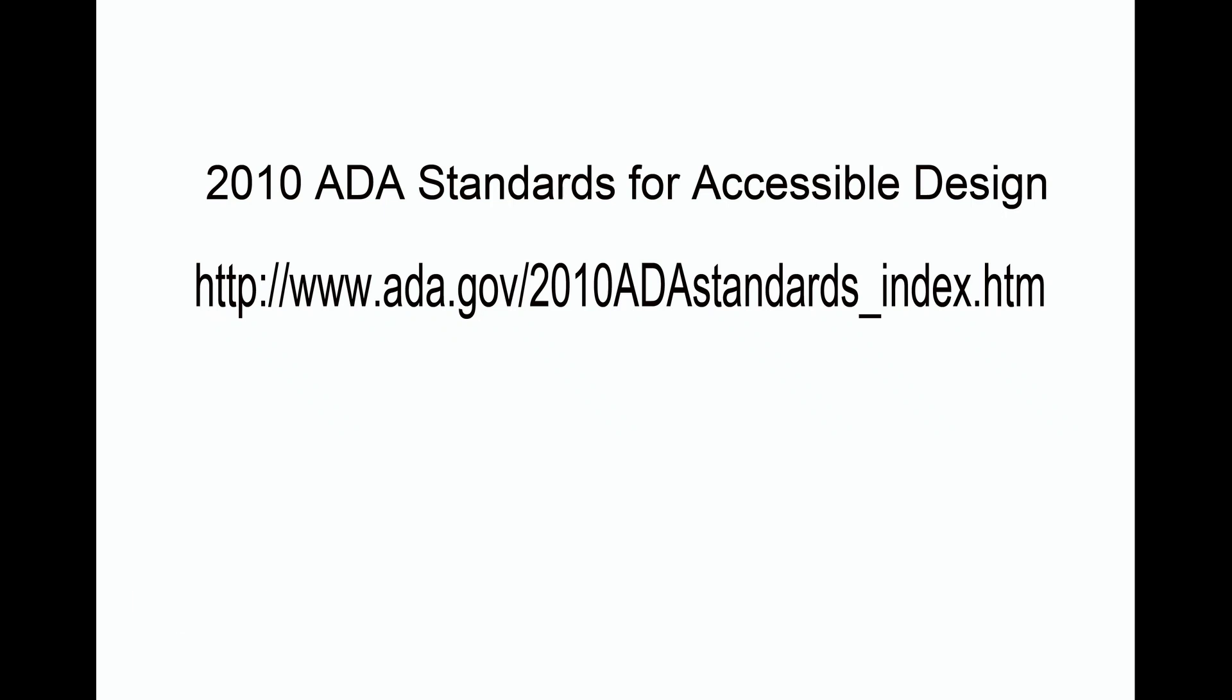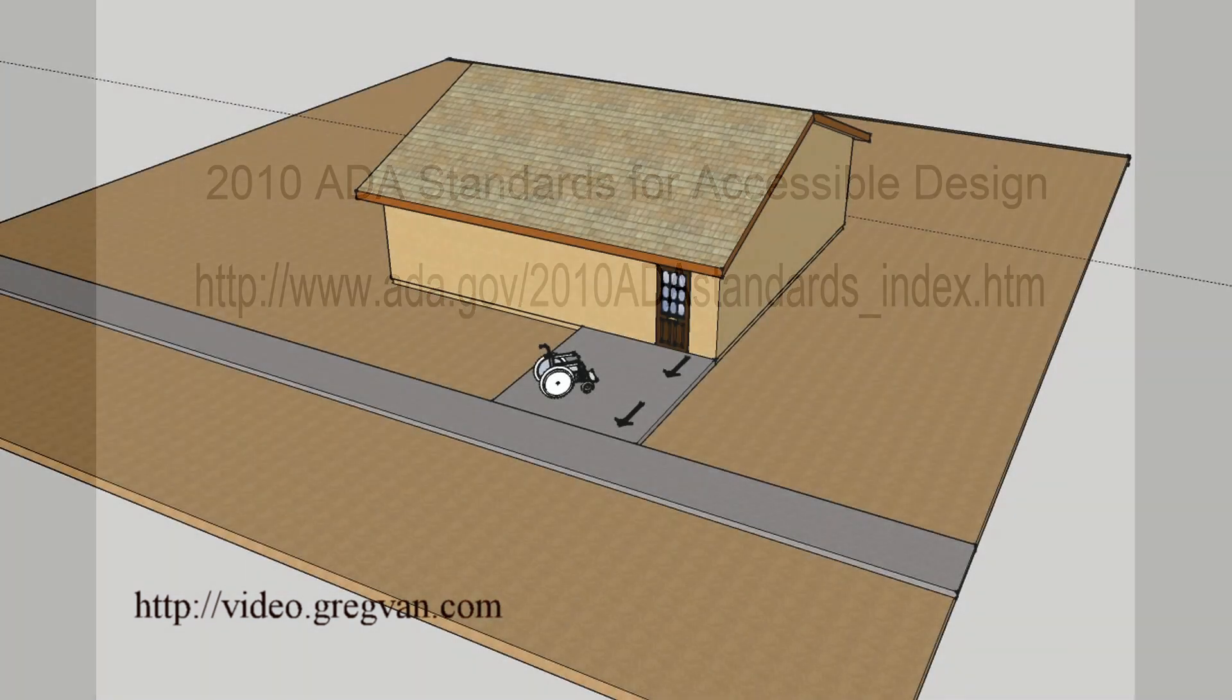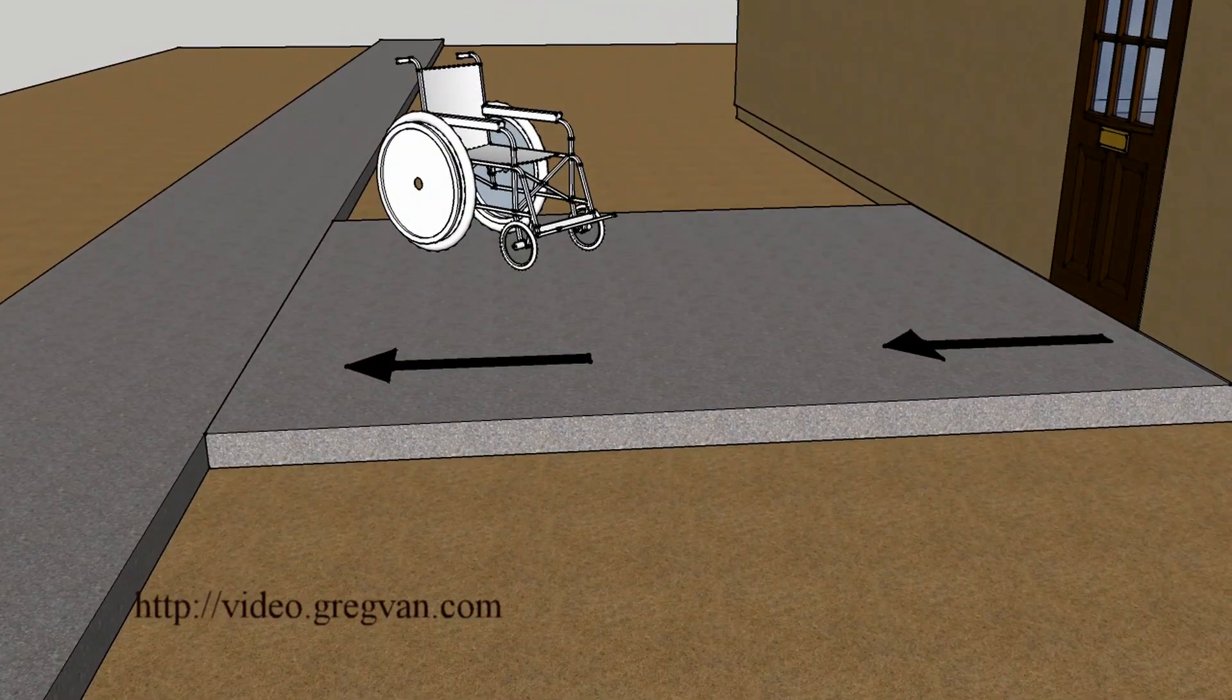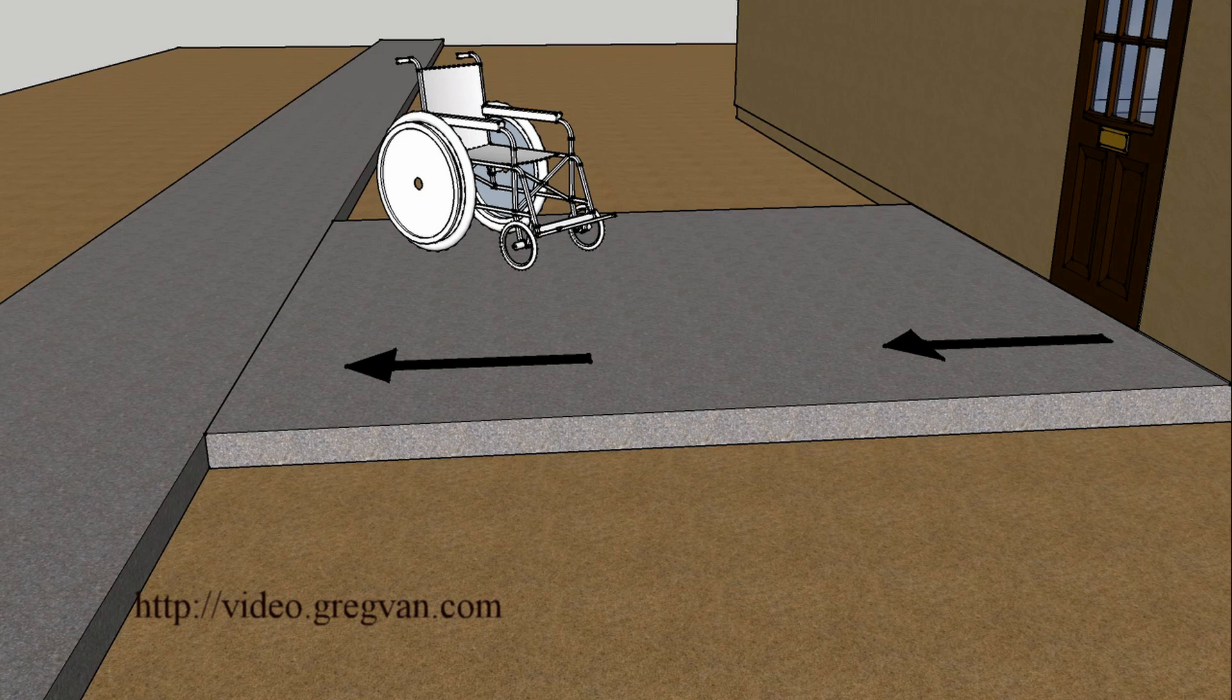In this video we will cover the requirements for the floor or ground surfaces or general walking surfaces for ADA requirements and that is going to be a maximum of 1 in 20. So a ratio of 1 to 20: for every 20 inches of horizontal you can drop down one inch vertical.